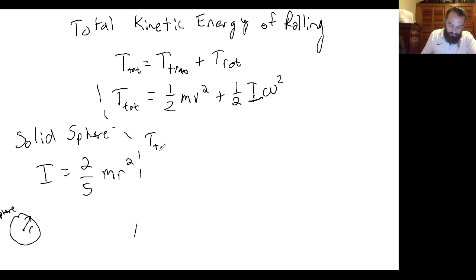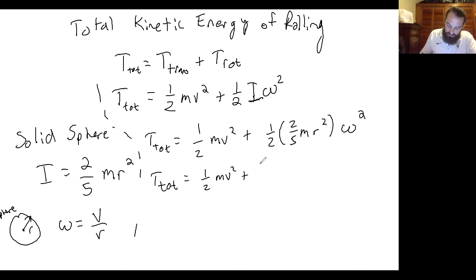So we could replace our I with one half times two fifths mr squared times omega squared. And now the other substitution that we can make is that omega is v over r. So if we plug that in with the omega here, we get T total is one half mv squared plus one half times two fifths mr squared times omega, which is v over r squared.